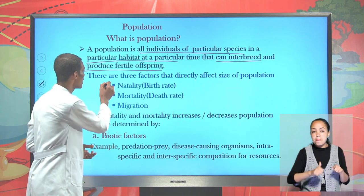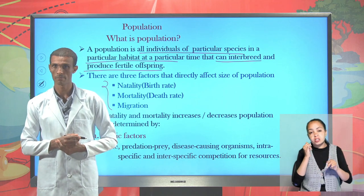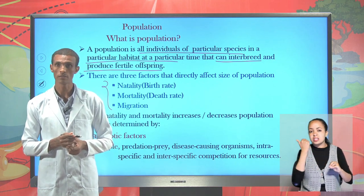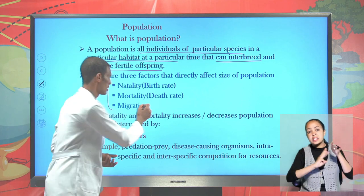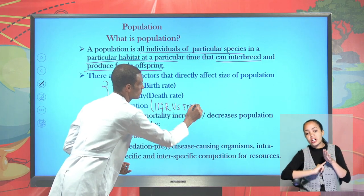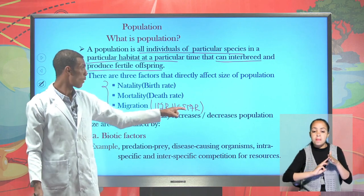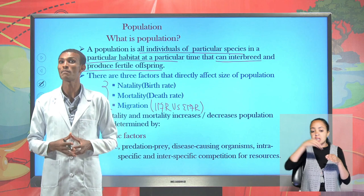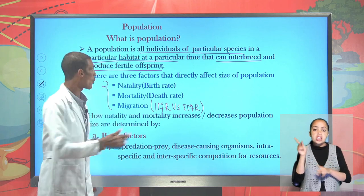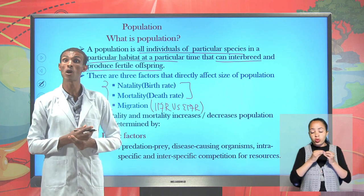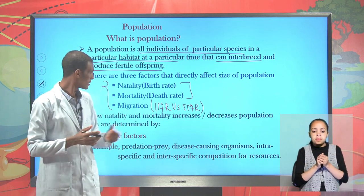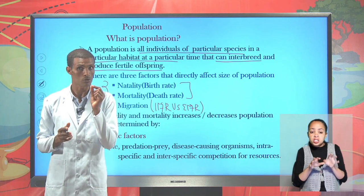There are three main factors that can influence population size. The first is natality — the number born. The second is mortality — the number that die. The third is migration — in-migration versus out-migration. Natality and mortality can affect both global and local population size, whereas migration can affect only local population growth or size.